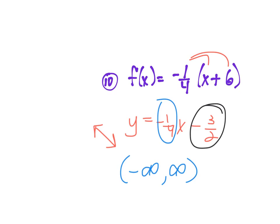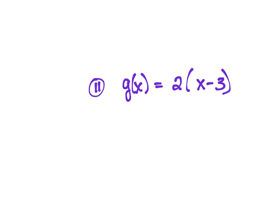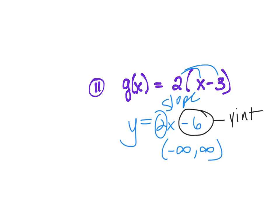It's going to say interval notation — if you tell me all real numbers, I'm marking it wrong. For y equals 2x minus 6: domain is negative infinity to positive infinity. The y-intercept is at negative 6, and the slope is 2 up 1 over.